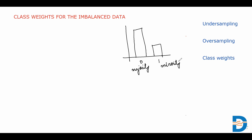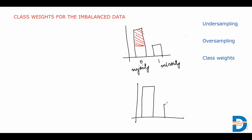To deal with this kind of data, we either do under-sampling or over-sampling. With under-sampling, we remove some samples from the majority class to match the size of the minority class, and then train the model on that data. With over-sampling, we increase the samples for the minority class to match it with the majority class.